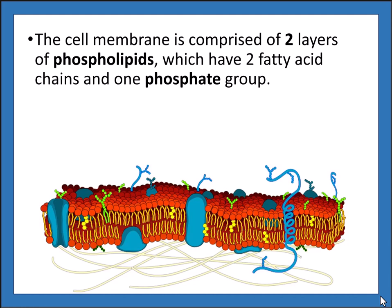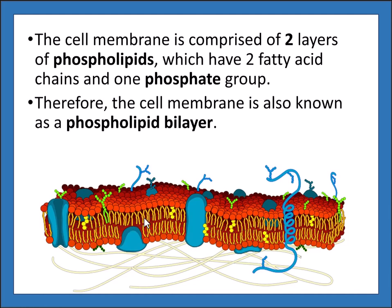There are two layers — one here and one here — made of phospholipids, which are these ball-shaped structures with two tails. The cell membrane is also known as a phospholipid bilayer. The word 'lipid' means fat and 'bi' means two, so this is a double layer of fatty acids.